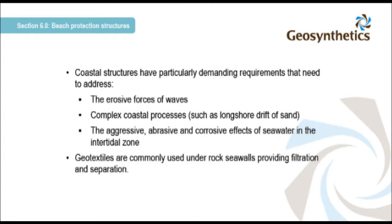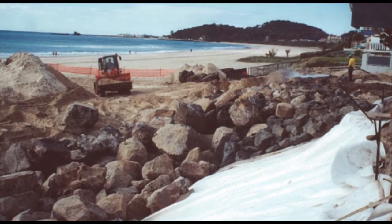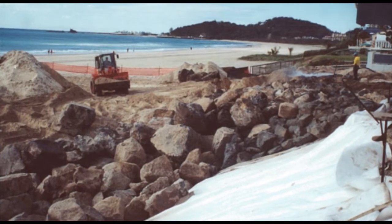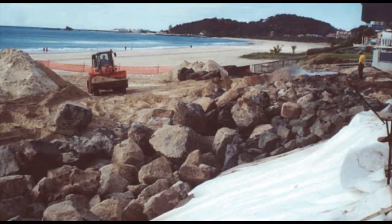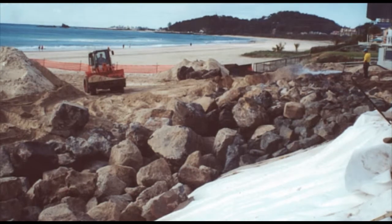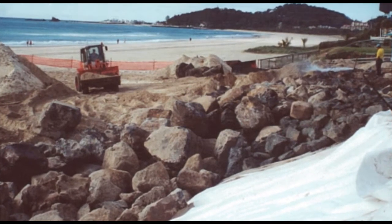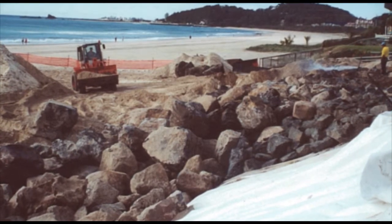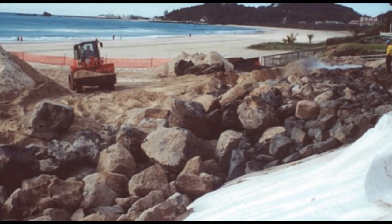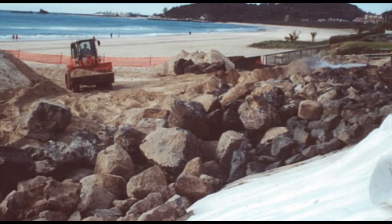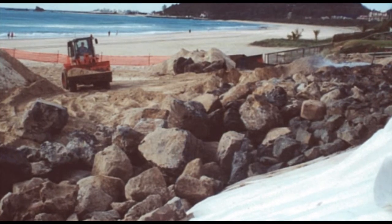Geotextiles are commonly used under rock seawalls providing filtration and separation. Rock is the traditional material used in beach protection structures. Here we see a rock revetment being built on the foreshore. A thick non-woven geotextile is used underneath the rock as a filter medium. It allows the water to pass through without washing away all the sand beneath the rock.